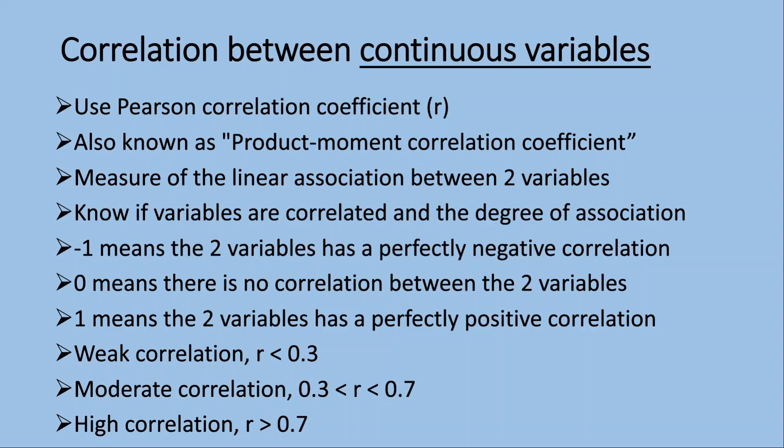Before we start with our analysis, I would like to first go through the theories behind finding association between variables. To find the correlation between continuous variables, we use Pearson correlation coefficient, also known as the product moment correlation coefficient. It's a measure of the linear association between two variables. You will know if the variables are correlated and also the degree of association. If the coefficient is minus one, it means the two variables have a perfect negative correlation. Zero means there's no correlation and one means a perfect positive correlation.